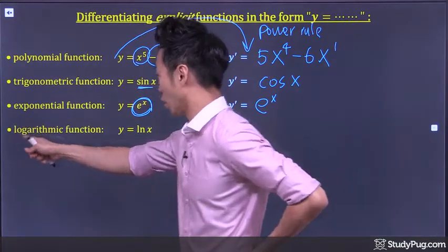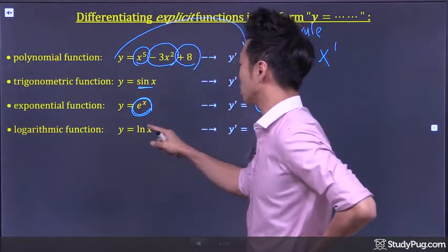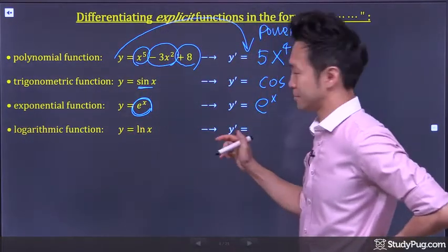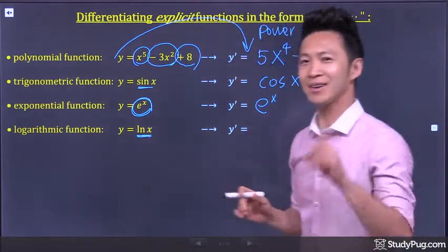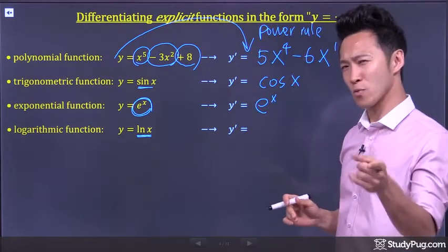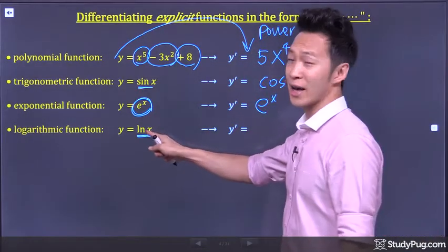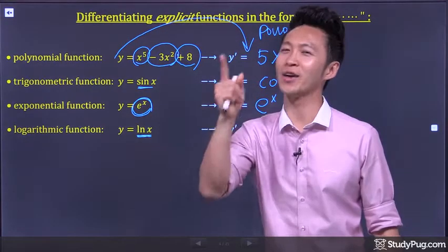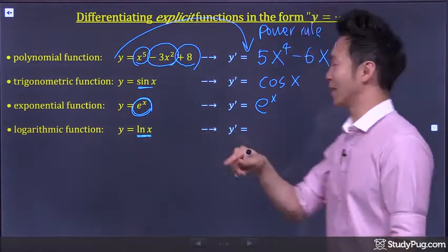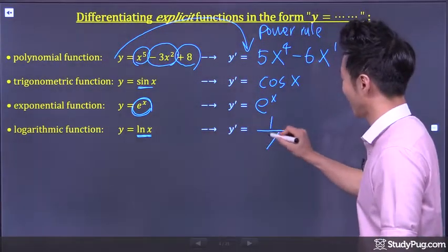Differentiating a log function: y is equal to ln x. The derivative of ln x is 1 over x. You got it.